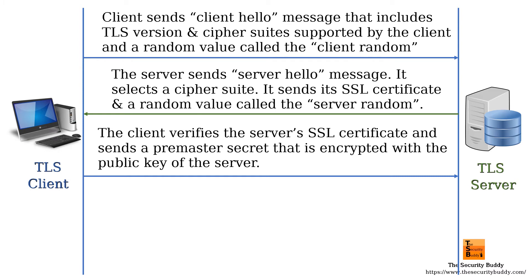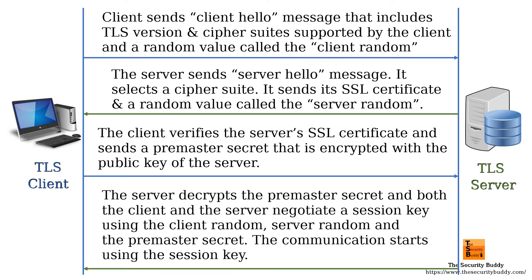Now the client uses the public key of the server and encrypts a random value called the pre-master secret and sends it to the server. The server decrypts the random value using its private key.